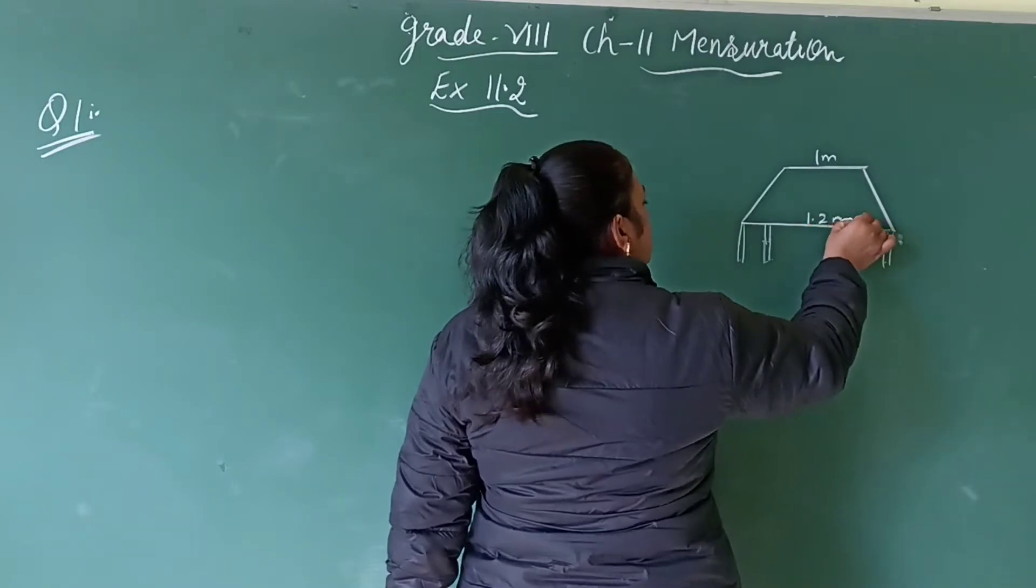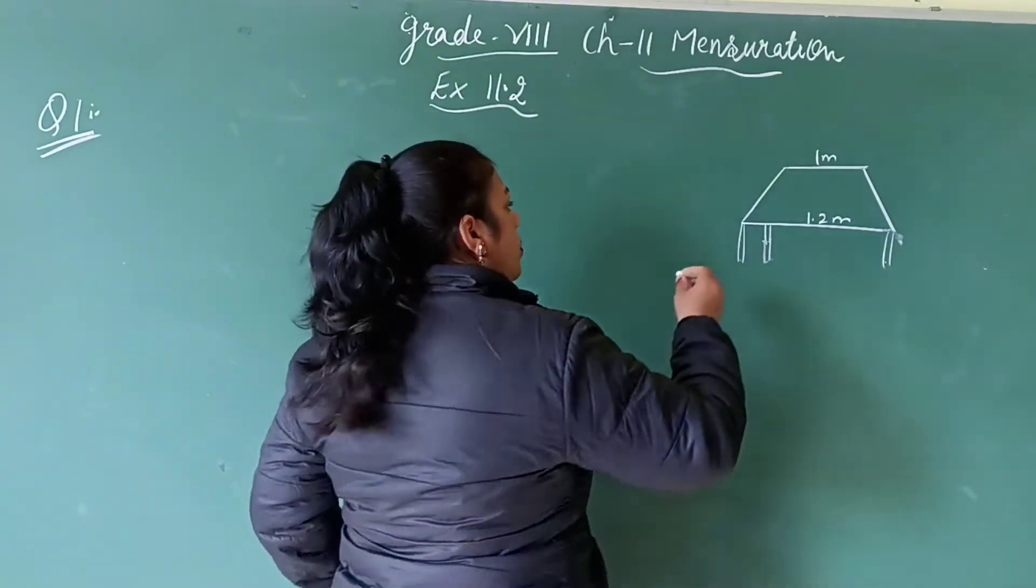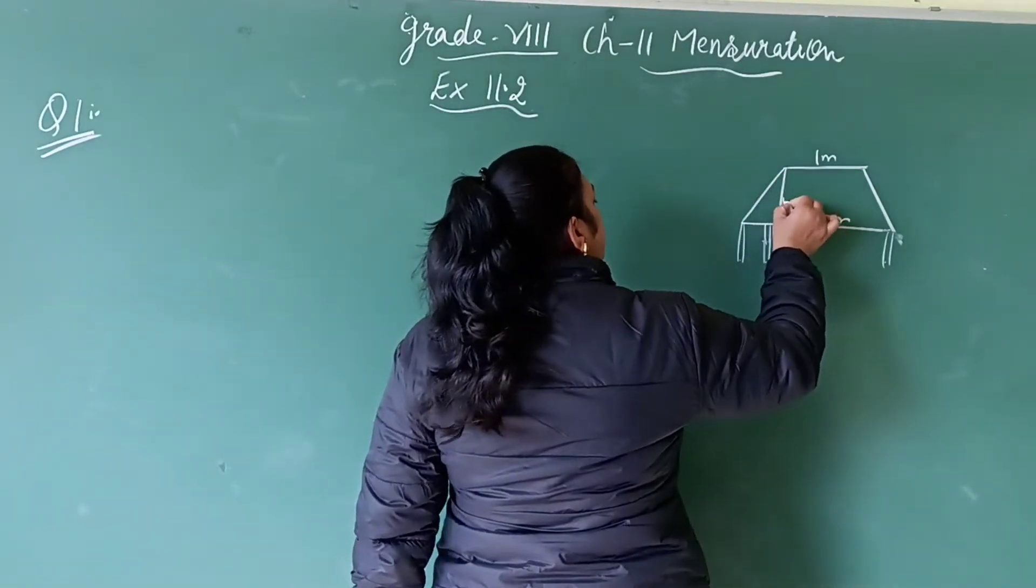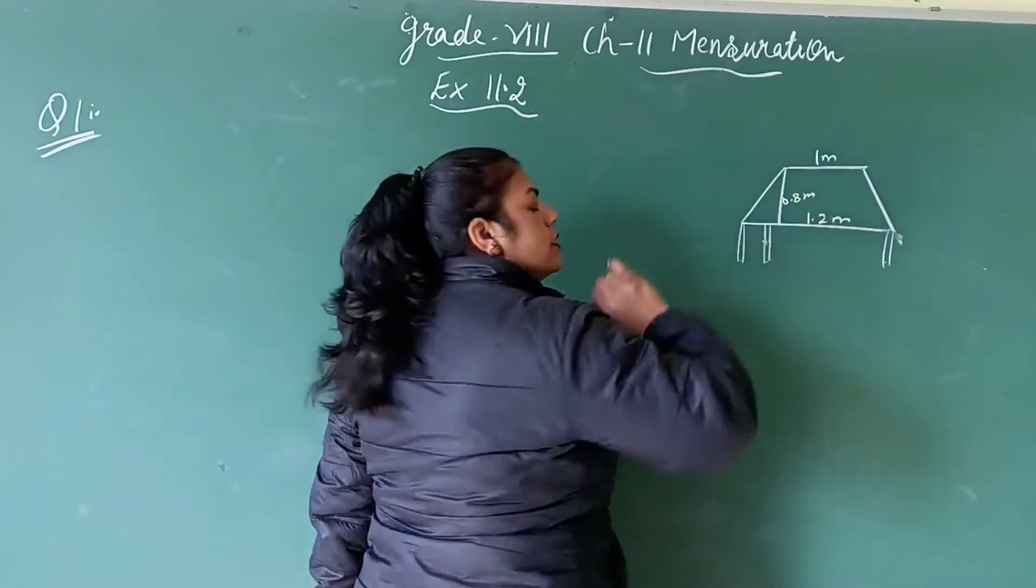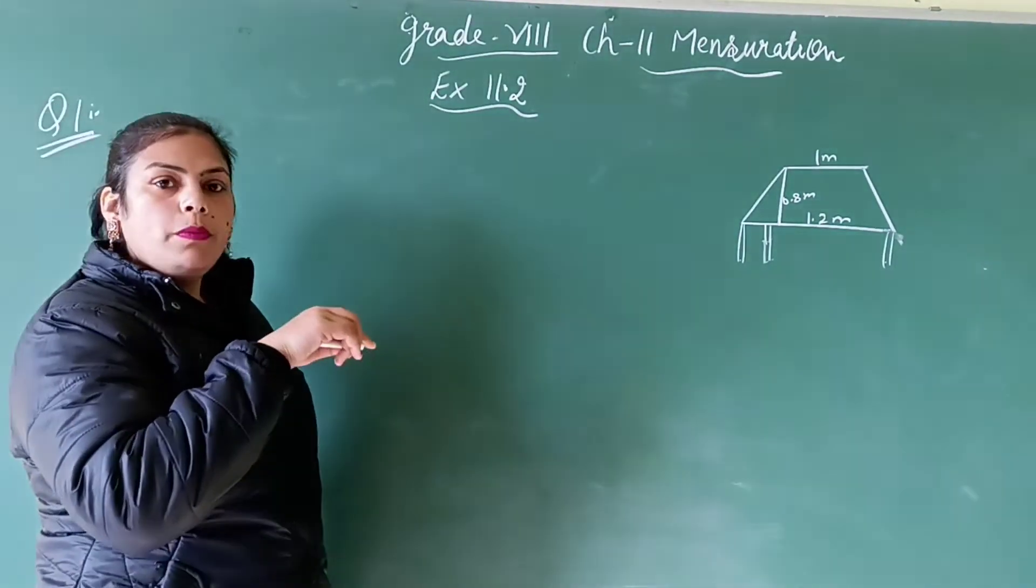This is the greater side. So it's 1.2 and that is 1 meter. And perpendicular distance between them is 0.8 meter. So what is the area of this table top?